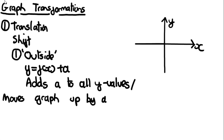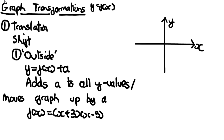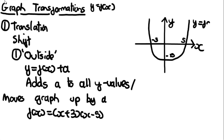Another way of saying this, to make graph sketching easier, is it moves the graph up by a. Let's do an example to illustrate this. Let's say f(x) = (x+3)(x−5), so it's a quadratic. Sketching y = f(x): there's a root at −3 and 5, it's a positive quadratic, and the y-intercept is −15. So the graph looks like this, labelled with −3, 5, and −15.